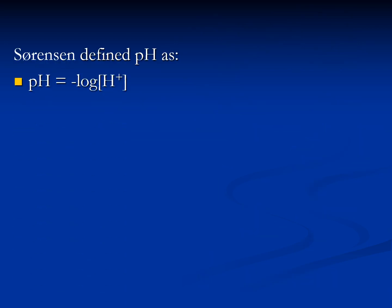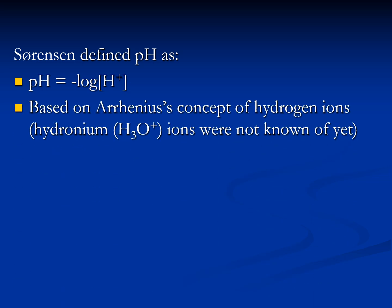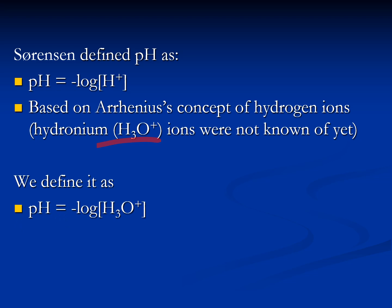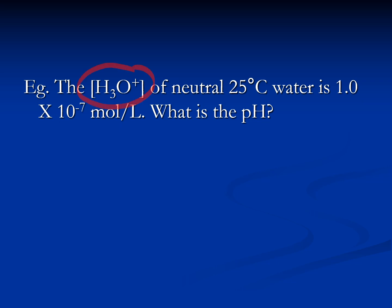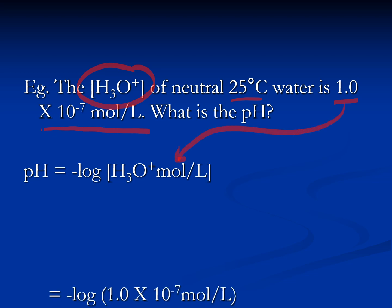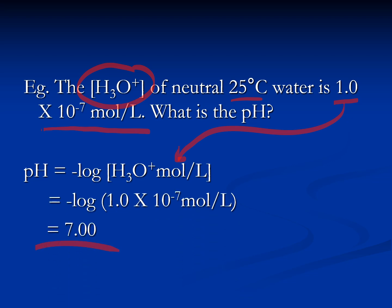pH is defined as the negative log of the hydrogen ion concentration — or more precisely, the negative log of the hydronium ion concentration, written as -log[H₃O⁺], where the square brackets indicate concentration in moles per liter. Whatever the concentration in moles per liter, take the negative log of that number and you have the pH. For example, if a solution at 25°C has a hydronium ion concentration of 1×10⁻⁷ mol/L, you take the negative log of 1×10⁻⁷, which gives a pH of 7.